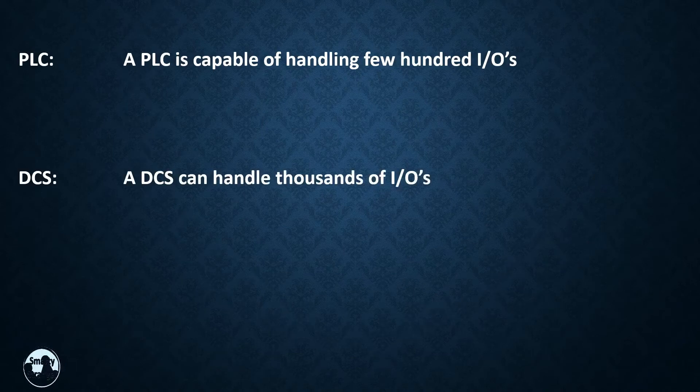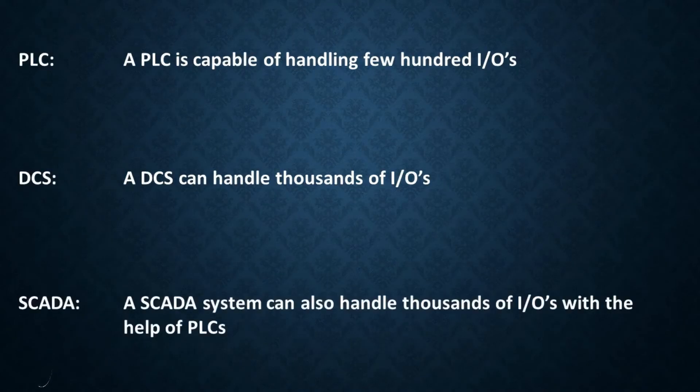A PLC is capable of handling a few hundred inputs and outputs. A DCS can handle thousands of inputs and outputs. A SCADA system can also handle thousands of inputs and outputs.